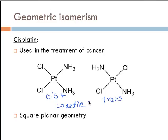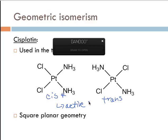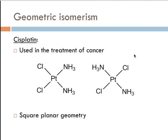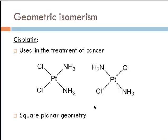Cisplatin is used in the treatment of cancer, particularly testicular and ovarian cancer, among others. It targets the DNA of the mutated cells and prevents those cells from replicating. So how does this cisplatin work?